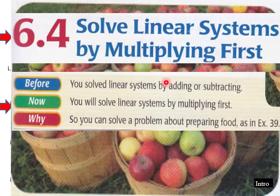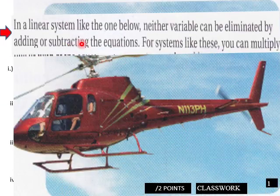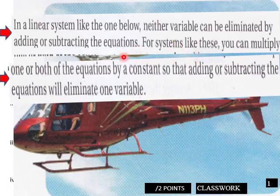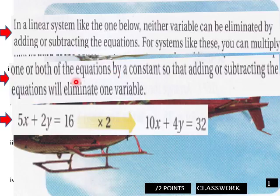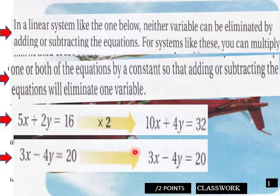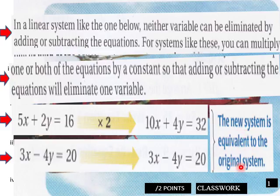Okay, solving linear systems by multiplying first. You solve linear system by adding subtracting. You will solve by multiplying first. We're going to get into multiplying to solve systems of equations. In a linear system like the one below, neither variable can be eliminated by adding or subtracting. For a system like this, you can multiply one or both equations by a constant. So adding or subtracting the equations will eliminate one variable. So we can multiply this to get this. And then this way we can combine these two to eliminate the y variable. So multiply this by 2 to make this 4. This is already a negative 4y. So then we just combine those. New system is equivalent to the original. It's just we just multiply it by 2. It's not in simplest forms like this was here.